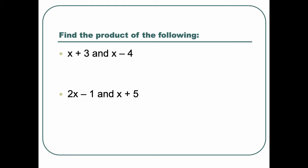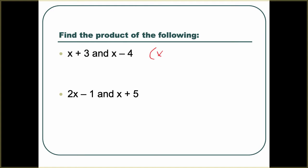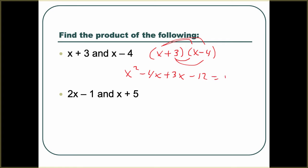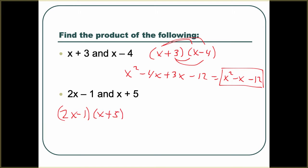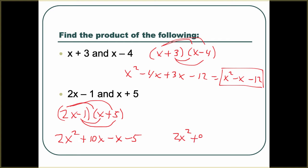We're doing some warm-up. Find the product of x plus 3 and x minus 4. We did this back in section 8.3. Take x plus 3 times x minus 4, do the FOIL or distribution, and you get x squared minus 4x plus 3x minus 12. When you simplify it, you get x squared minus x minus 12. For the next one, 2x minus 1 and x plus 5 — distribute completely and combine like terms. You get 2x squared plus 9x minus 5. That is our product.